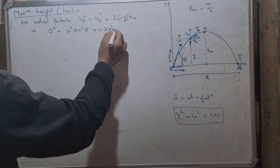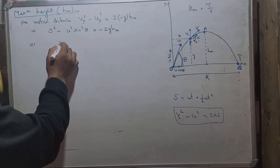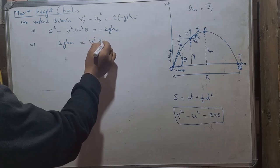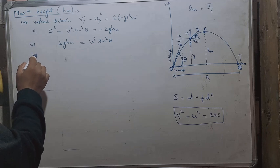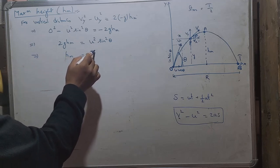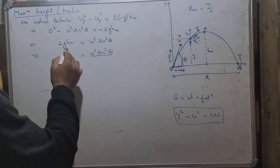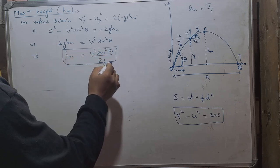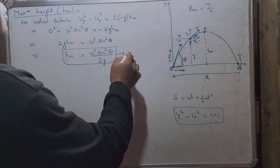Therefore, HM = U² sin²θ / 2g. This is the equation for the maximum height of a projectile. We label this as equation number 4.